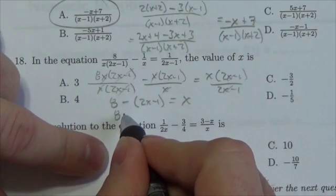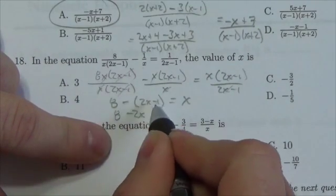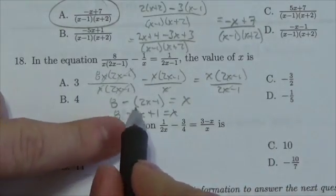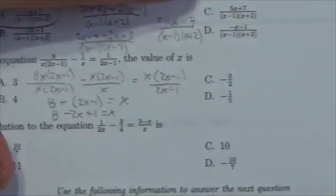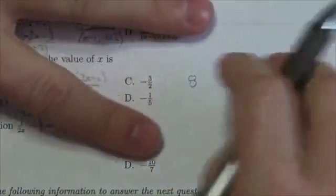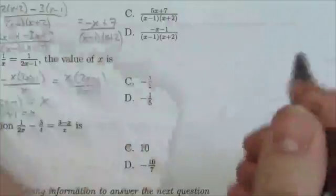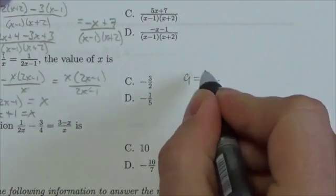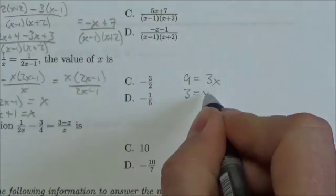So now this is 8 minus 2x plus 1 is equal to x. Now, bring the negative 2x over to the other side, and I'm going to need more room here. And if I do that, and I add the 8 and the 1, and I can't believe I was just about to write that. 8 plus 1 is 9, and if I bring that 2x over I get 3x. Well if I divide I get that x is equal to 3.